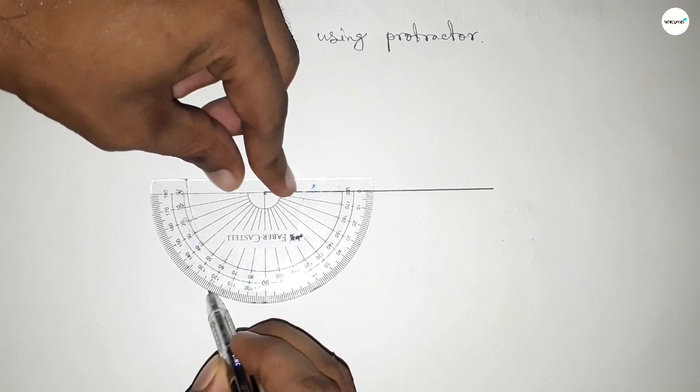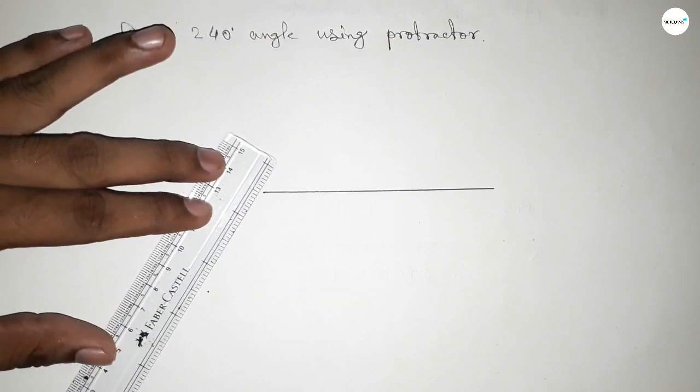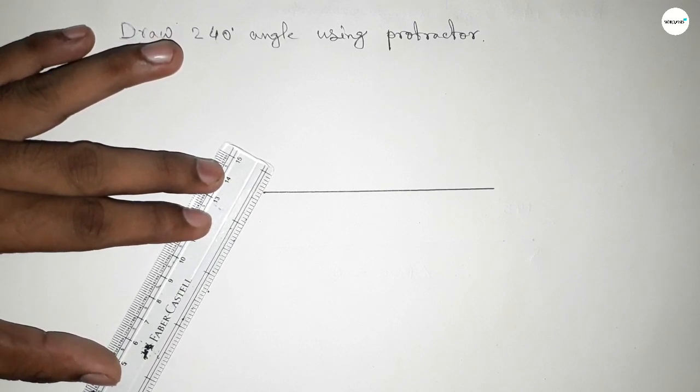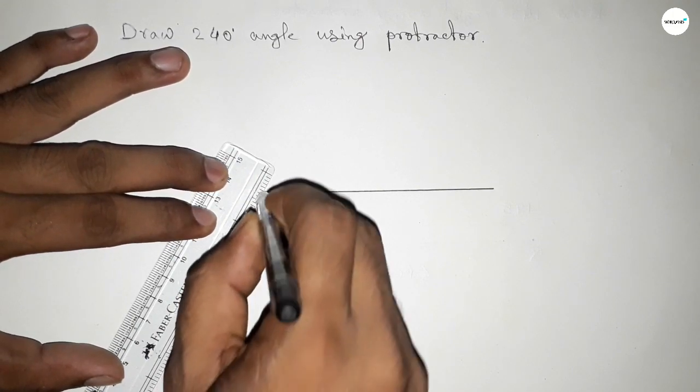With 180, then we can get a 240-degree angle. So by joining this, we get a 240-degree angle.